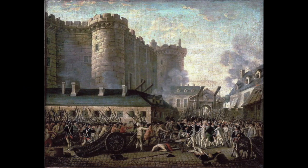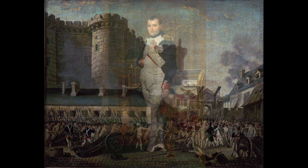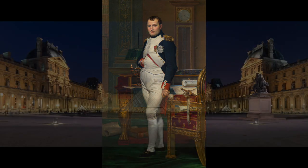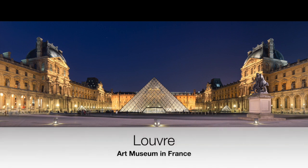The French Revolution was a period of time when there was a lot of change in France. The new leader of France after the revolution was Napoleon Bonaparte. He moved the Mona Lisa to his home in the Tuileries Palace and hung it in his bedroom. Later, in 1797, the Mona Lisa was moved to the Louvre, a famous art museum in Paris where it's still hanging today. It is owned by the government of France.